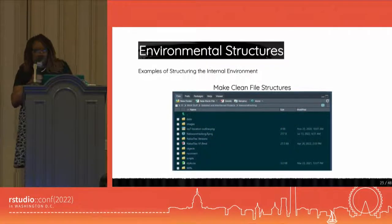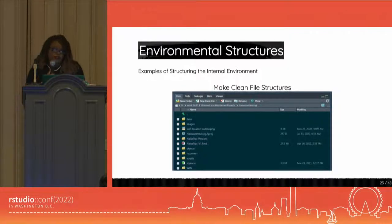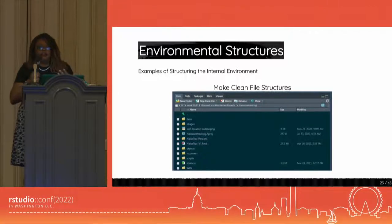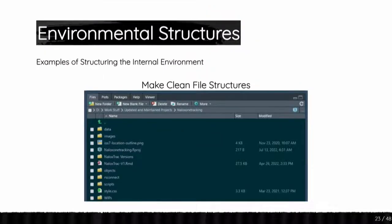So speaking of internally, there are also examples of introducing structure this way. The first example is simply named make clean file structures. And this is so much more than making sure your folder names are clean and your data is in a data folder and your scripts are in a scripts folder. This also encompasses knowing how to work with R project files and knowing where you are in your working directory, because that's the only way you're going to get a full flow automation process with everything stored organized and seamless.